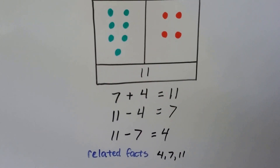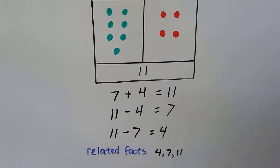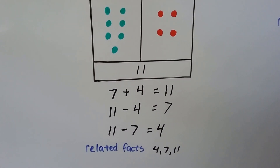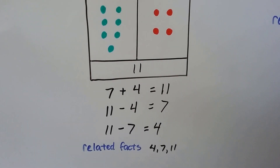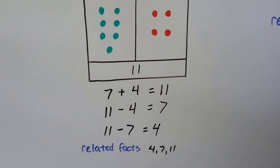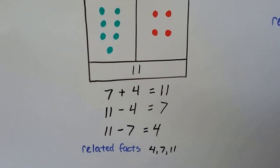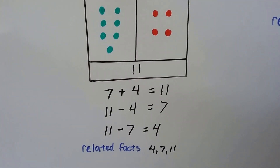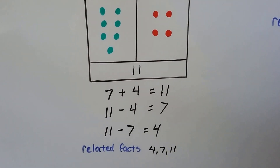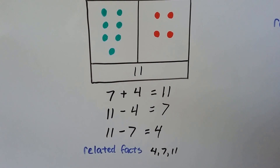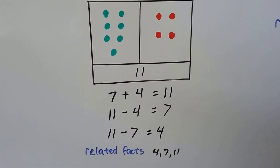For this one, we have 7 green dots and 4 red dots. 7 plus 4 is 11. And if we have 11 dots and we take the 4 red ones away, we'll only have the 7 green ones left — so 11 minus 4 equals 7. And if we have the 11 dots and we take the 7 green ones away, we'll just have the 4 red ones left — so 11 minus 7 equals 4. The related facts are 4, 7, and 11.